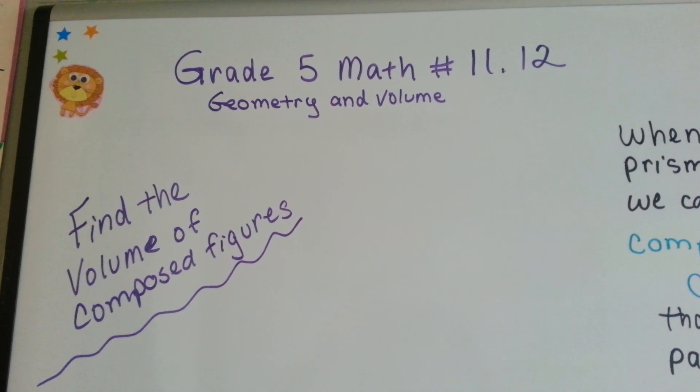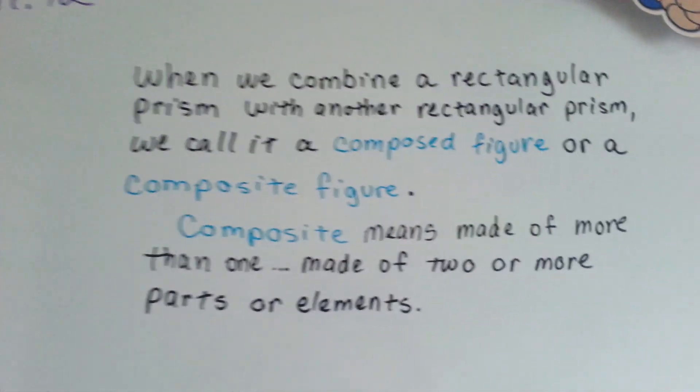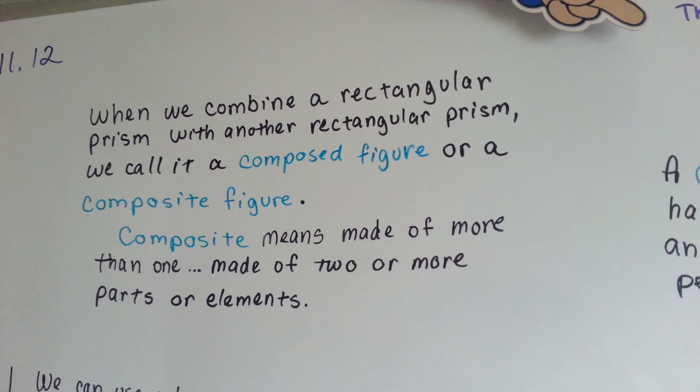Grade 5 math number 11.12. Find the volume of composed figures. When we combine a rectangular prism with another rectangular prism, we call it a composed figure or a composite figure.